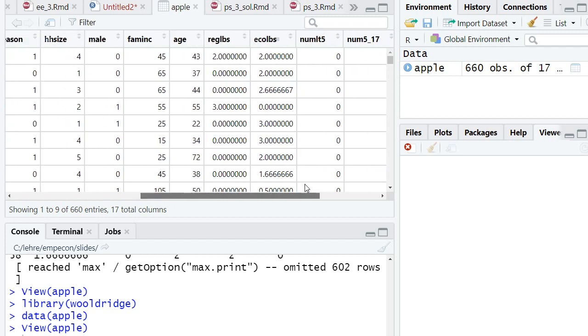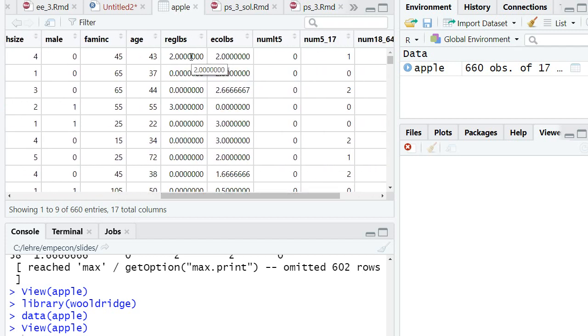There are two outcome variables: how much regular apples the household said they wanted to buy, and how many pounds of eco apples they wanted to buy.